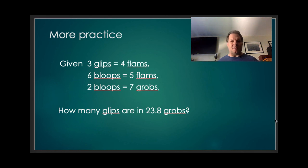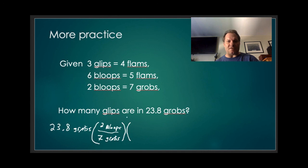Let's take a look at one last example. So this one might be made up. Three glips equals four flams. Six bloops is five flams. And two bloops are seven grobs. How many glips are in 23.8 grobs? So we go up here and find our grobs. Seven grobs is two bloops. So the seven grobs will go in the denominator. Our two bloops will go in the numerator. Now grobs cancel. I've got bloops in the numerator.